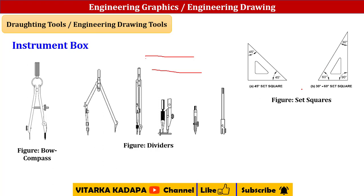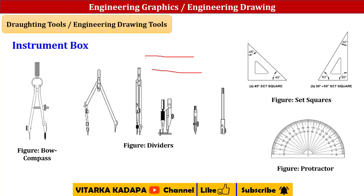Next are the set squares, which are used to draw 45-degree, 30-degree, and 60-degree angles onto the drawing sheet. So only 30, 45, 60, and 90 degrees can be drawn using set squares — that is the advantage of the set square. Next, the protractor basically consists of 180 degrees. In a full circle there are 360 degrees, but the protractor has only 180 degrees, where we can represent angles from 0 to 180 onto the drawing sheet, whatever the requirement may be.